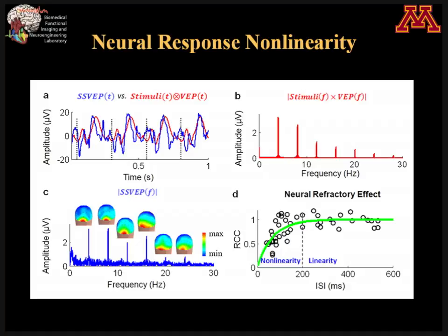We varied the inter-stimulus interval and looked at how our brain responds. The result is summarized in this curve. Fundamentally, the brain is a non-linear system. If you stimulate too fast — if the inter-stimulus interval is less than 200 milliseconds — it clearly shows a non-linear response, so the linear theory will not work. However, our finding is that if the inter-stimulus interval is greater than 200 milliseconds, the linear assumption actually works very well.